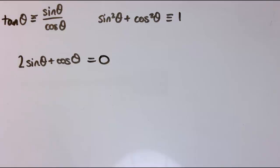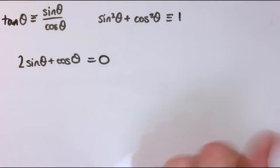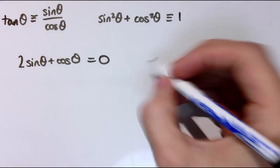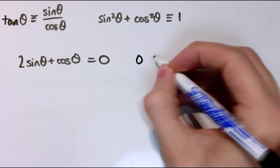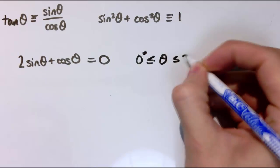Let's start with this one: 2 sin θ plus cos θ equals 0. And of course, for a trig equation, I do need to specify a range of values as well.